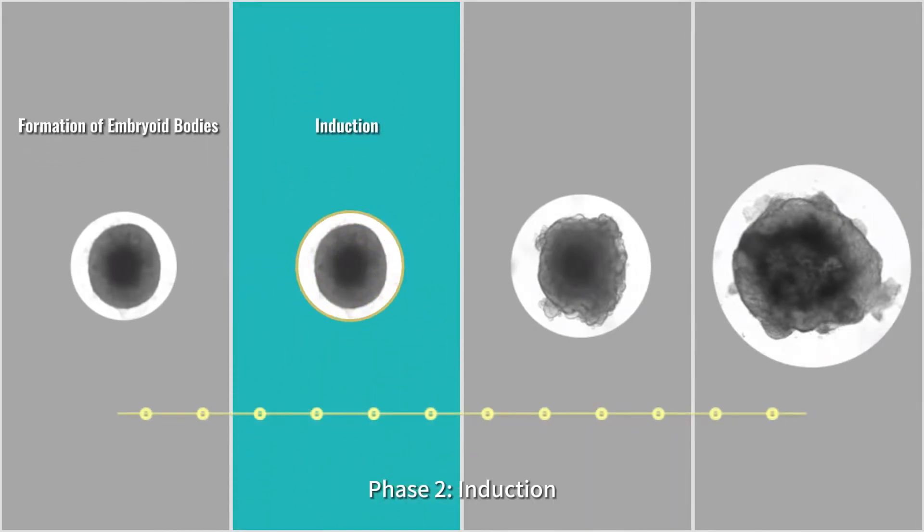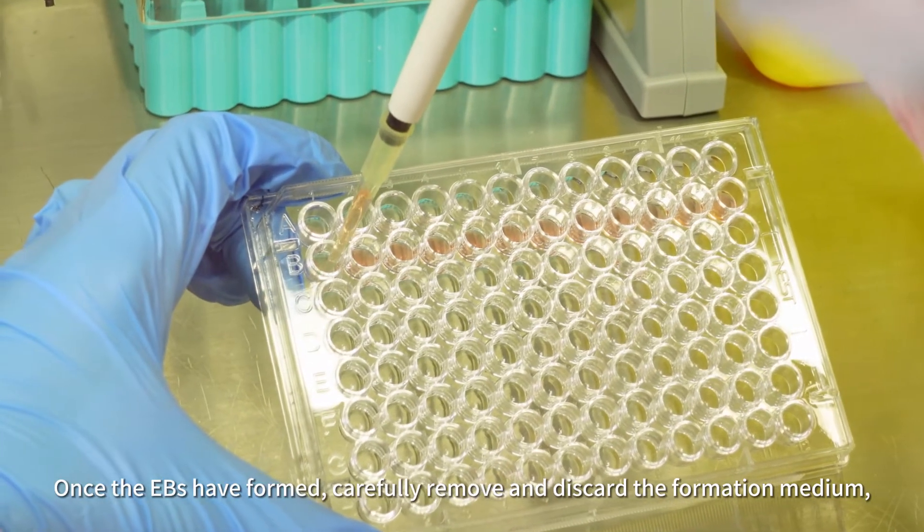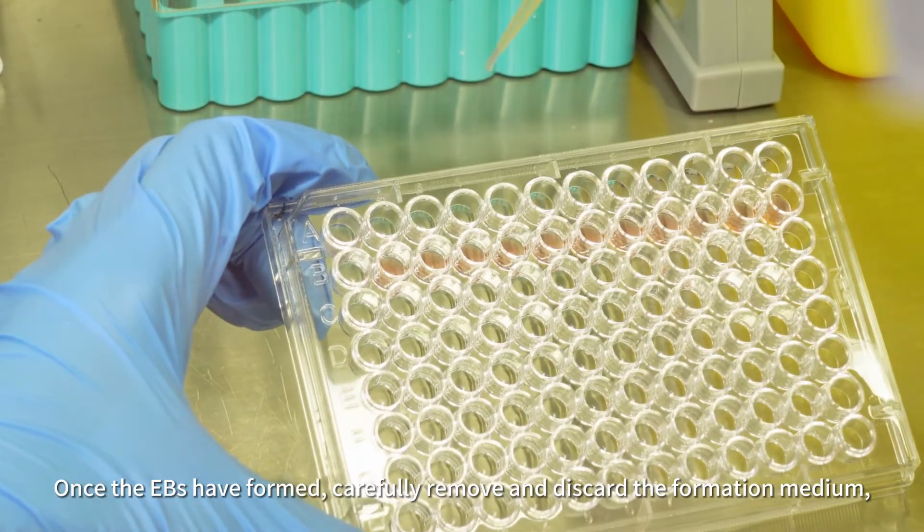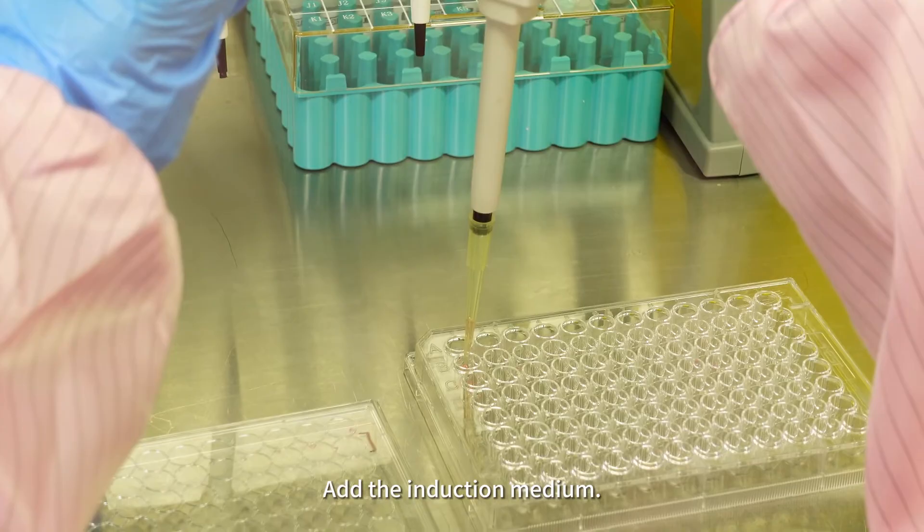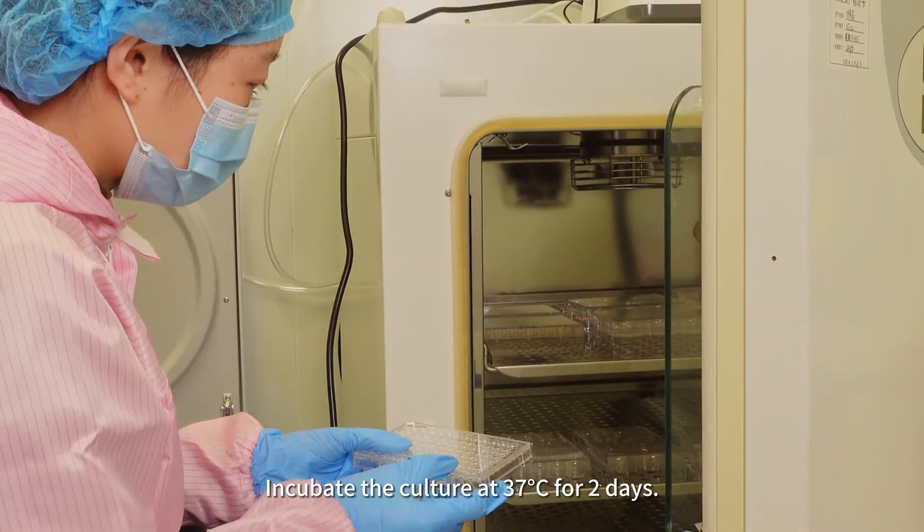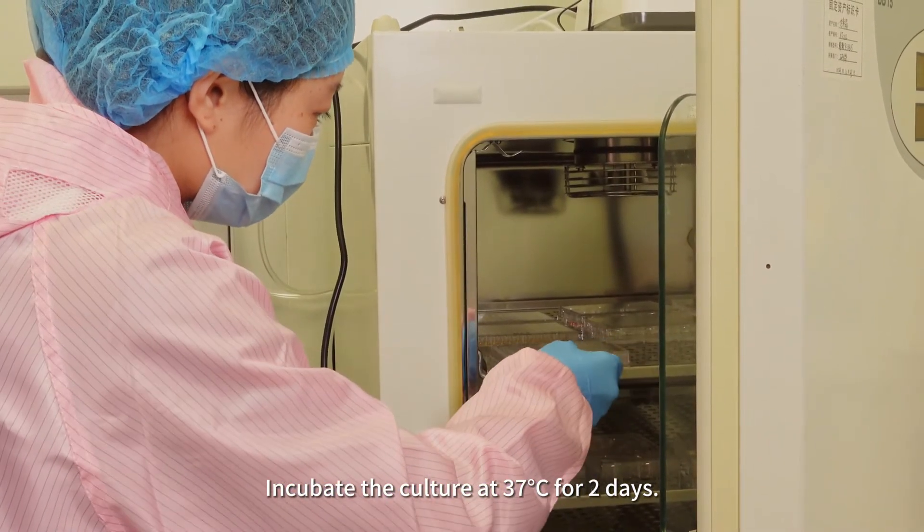Phase 2, Induction. Once the EBs have formed, carefully remove and discard the formation medium. Add the induction medium. Incubate the culture at 37 degrees Celsius for 2 days.